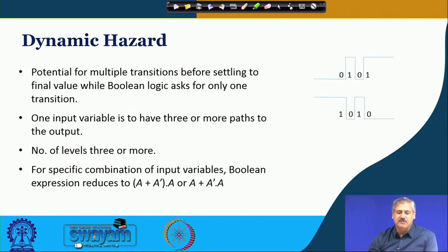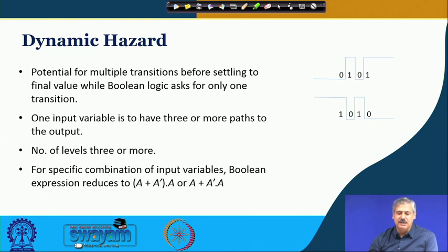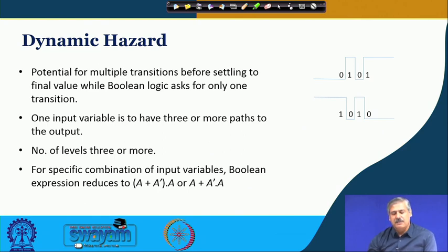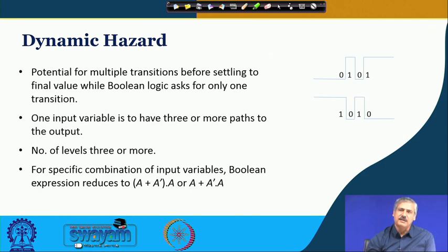For dynamic hazard, the input variable causing the problem must have three or more paths to the output and the circuit must have three or more levels — earlier for static hazards we saw two levels. Inherently one can see a relationship like a-plus-a-prime and a, or a-plus-a-prime-and-a — there is an implicit Static-1 or Static-0 hazard relationship visible in a dynamic hazard circuit.